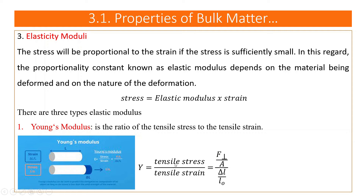Different materials have different values of Young's modulus Y. For example, given a specific material such as copper or steel, and knowing the applied perpendicular force, the change in length, and the original length, it is possible to find the radius of a circular rod, since the cross-sectional area equals πr².